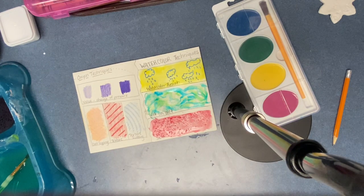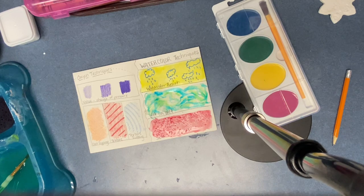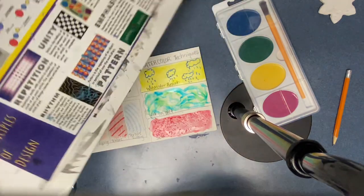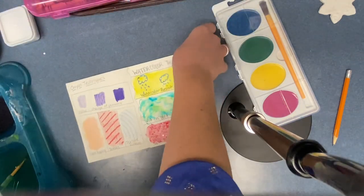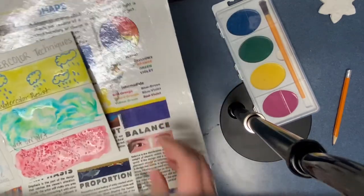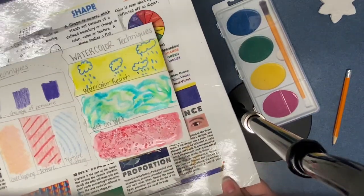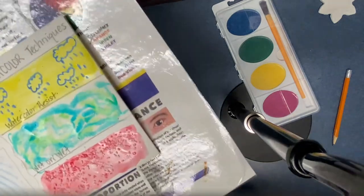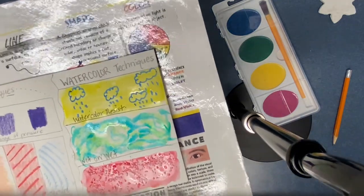So right now I need you guys to clean up your area. Making sure it's set up just how it was when you came in. When I call your colored team, you need to place your book onto the messy mat and put it onto the drying rack under your class code.